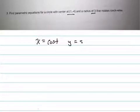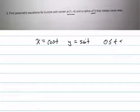You know that a circle centered at the origin would look like this: x equals cosine t, and y equals sine t, where t is between 0 and 2π.